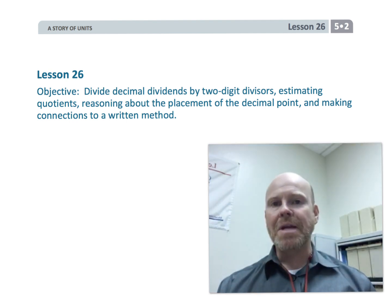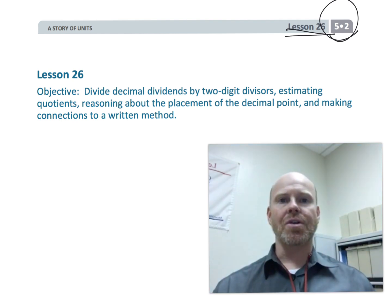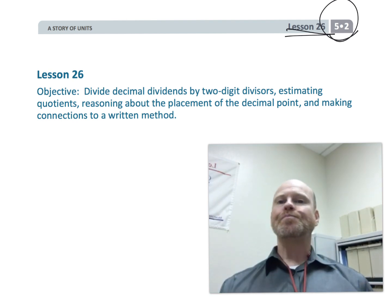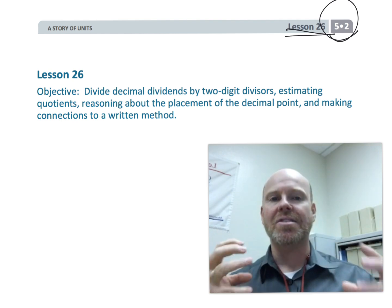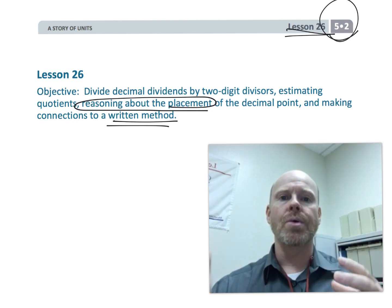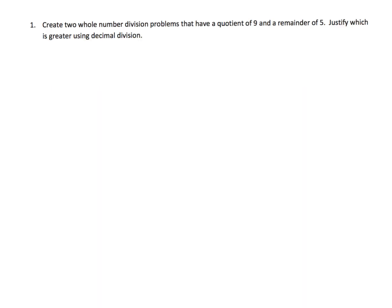This is fifth grade module 2 lesson 26. We are going to be dividing decimals following the standard algorithm, while continuing to use place value references to make sure students are building number sense. The problem says: create two whole number division problems that have a quotient of nine and a remainder of five, then justify which is greater using decimal division.